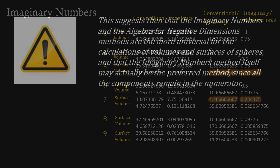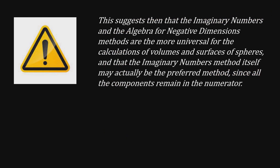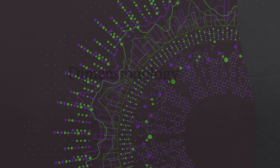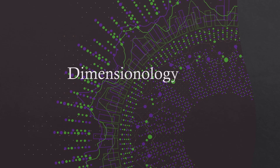This suggests that the imaginary numbers and the Algebra for Negative Dimensions methods are the more universal for the calculations of the volumes and the surfaces of spheres, and that the imaginary numbers method itself may actually be the preferred method since all the components remain in the numerator. This is Jeff Szabo for Dimensionology. Up next: Halving and Doubling.